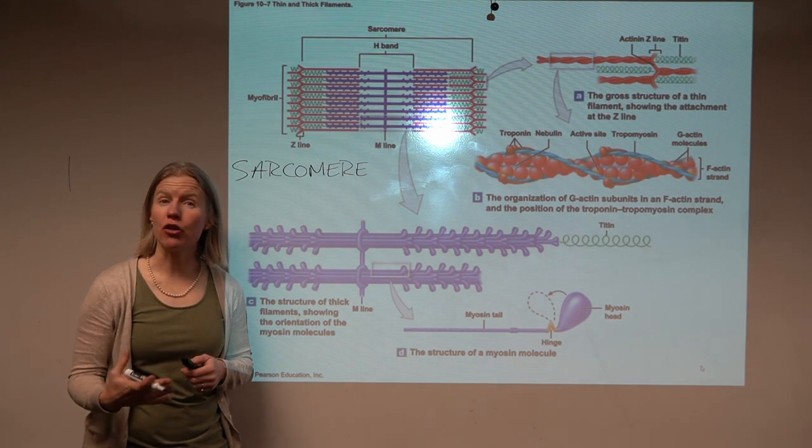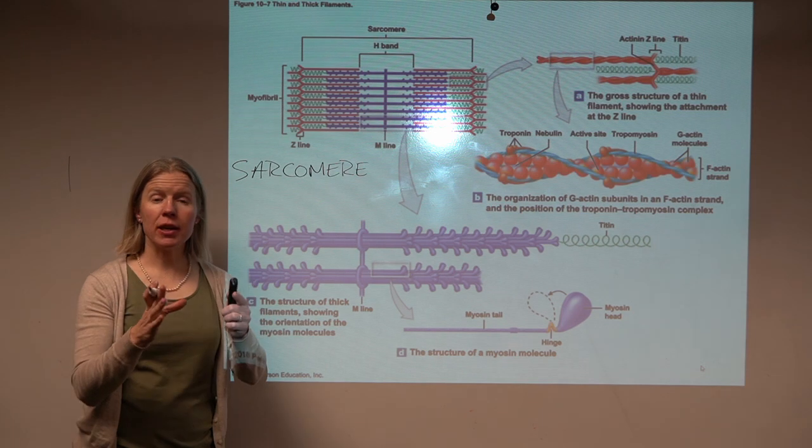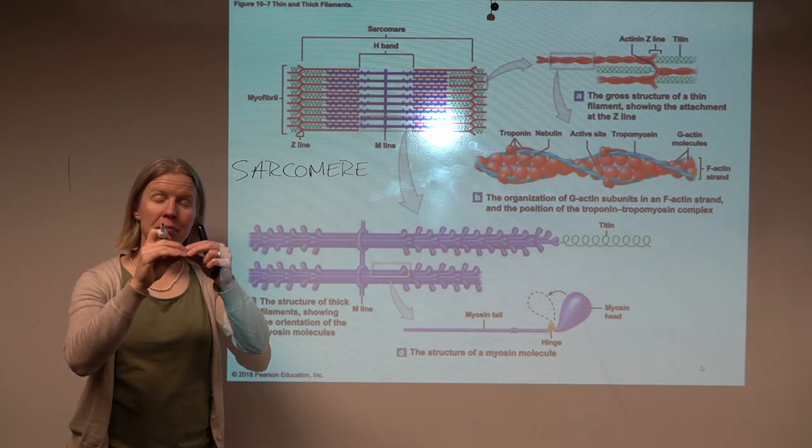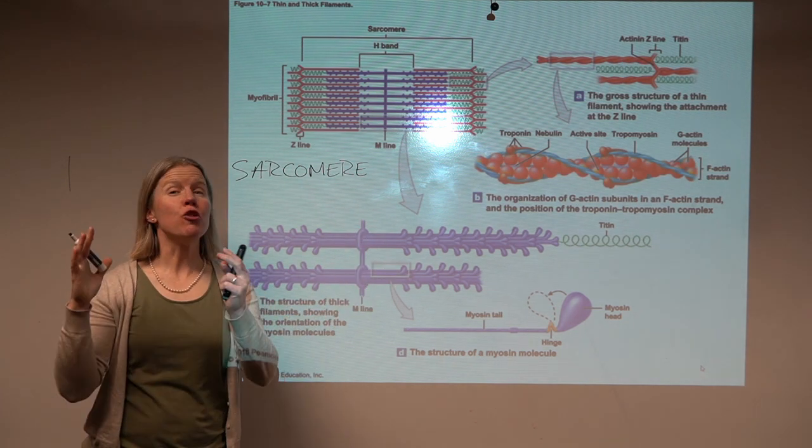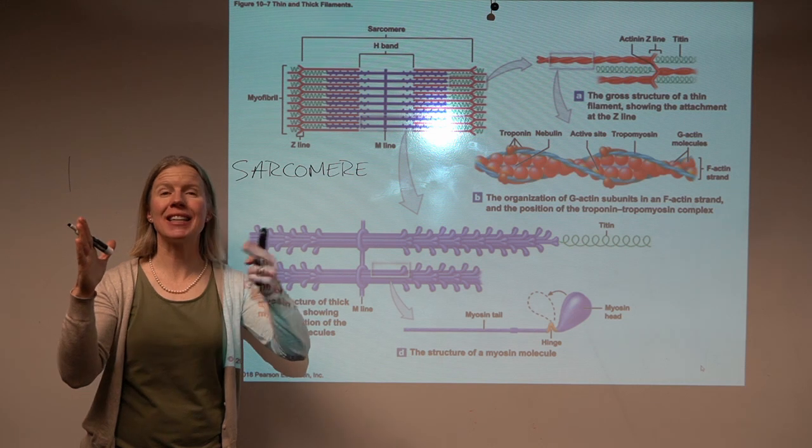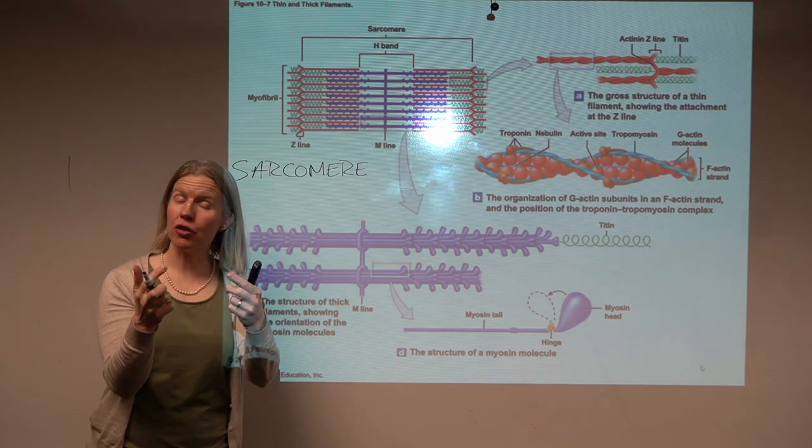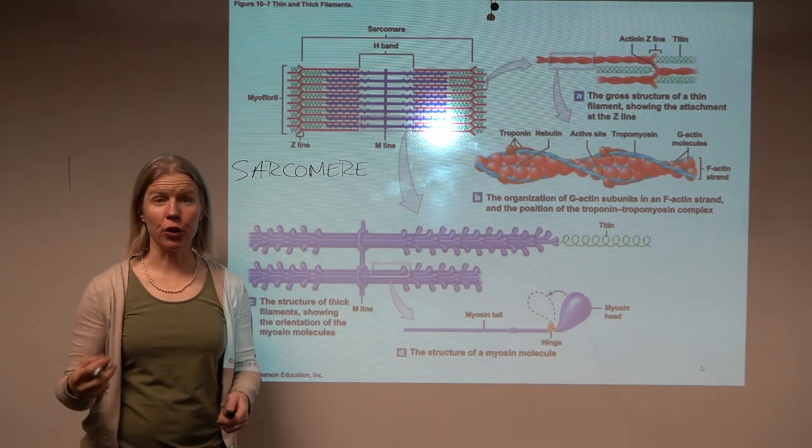This is going to be where contraction takes place. So in a myofiber, in a skeletal muscle cell, you might have 10,000 sarcomeres stacked end to end. As each sarcomere shortens, as it contracts, the entire muscle then is able to undergo contraction.